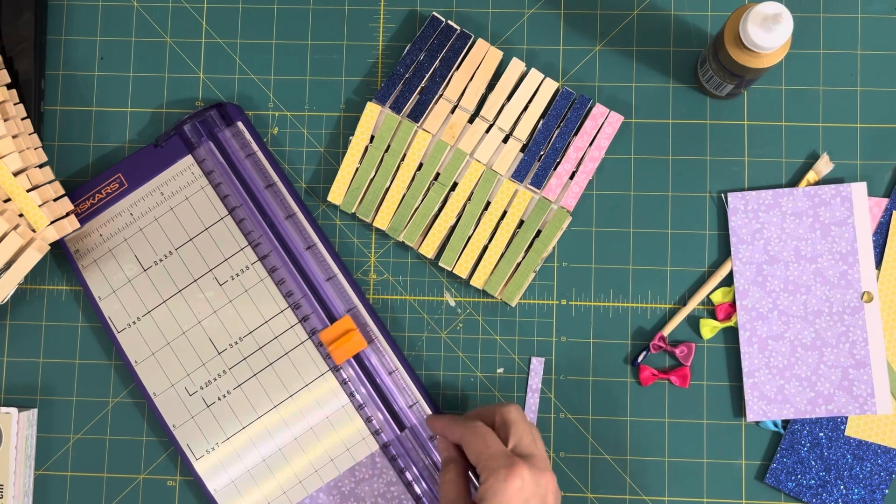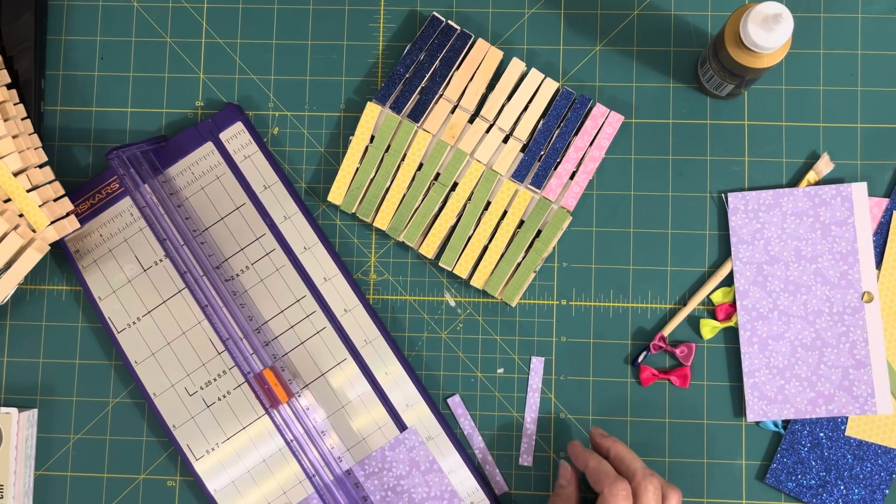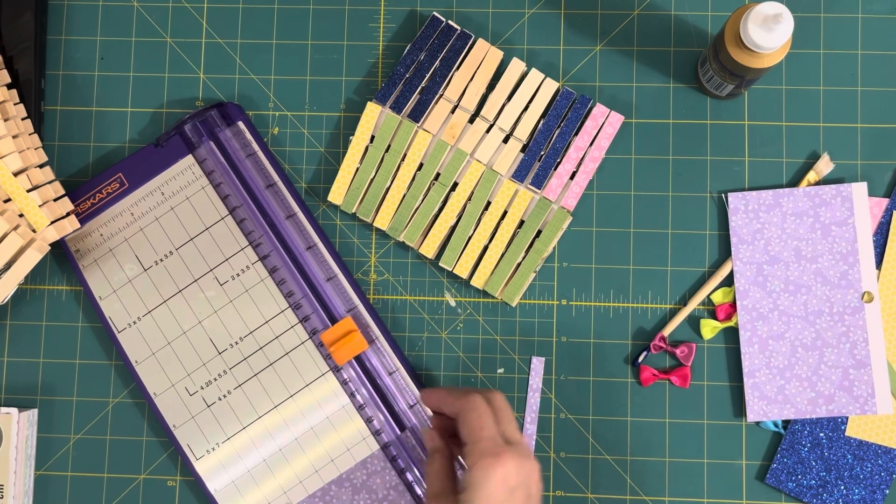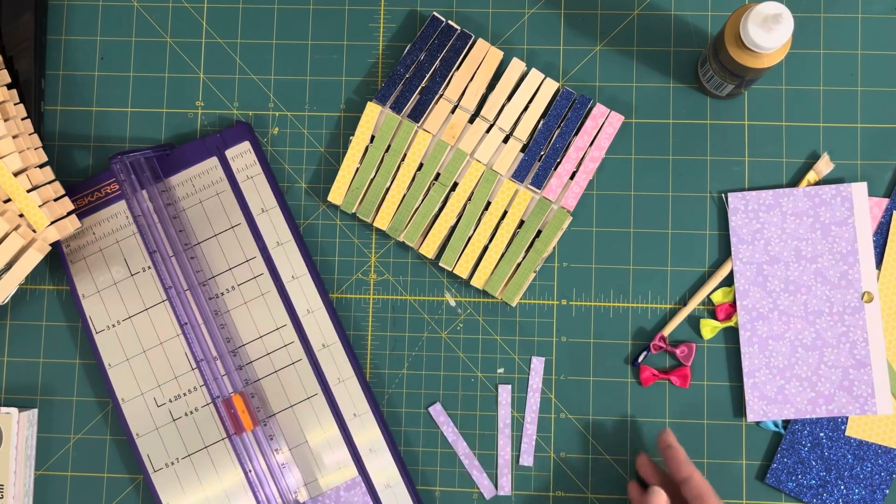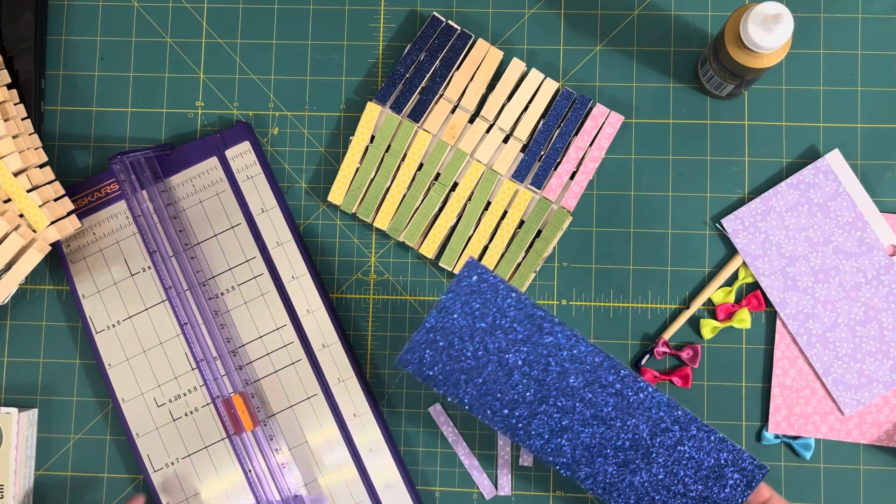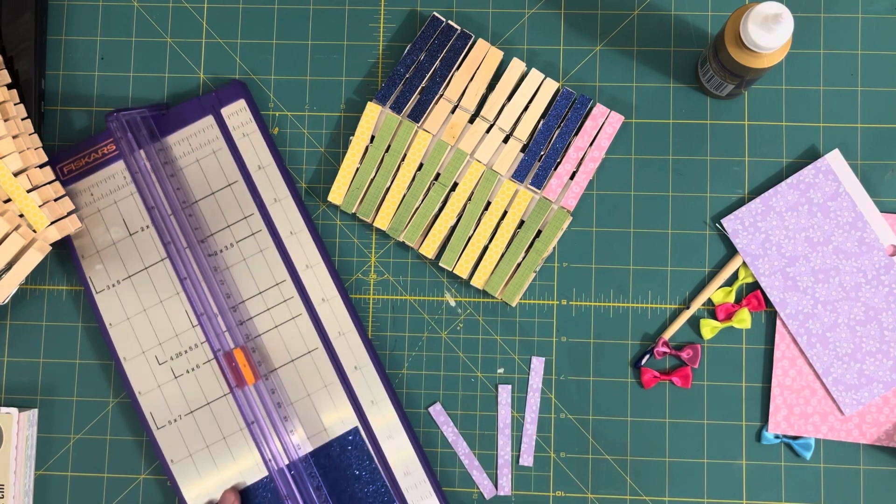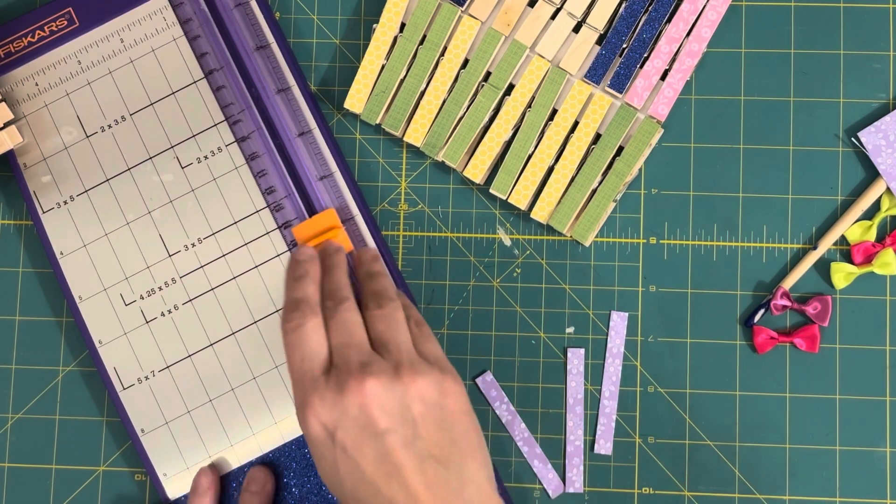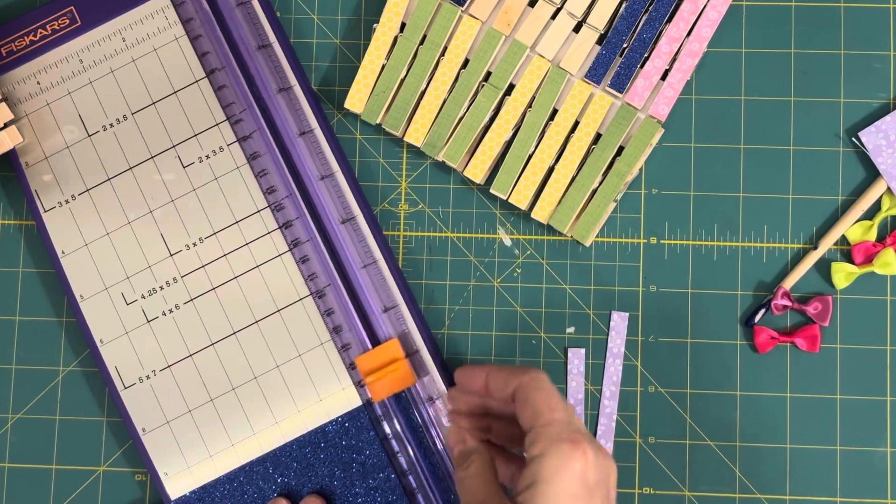Now you can cut stacks of paper, so you could probably cut about three at a time if your paper's not too thick. My glitter paper is super thick, so I can only cut one at a time when I'm doing it. And I've decided just for ease of this video to show you how to cover the entire side of the pen.